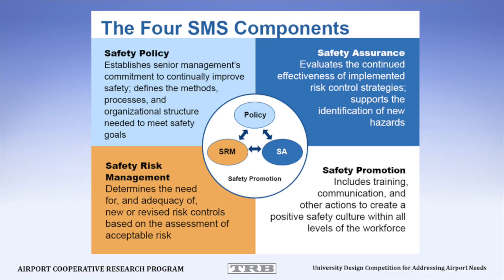First is safety policy, which is management's commitment to continually improve safety. It's the allocation of appropriate resources and defines the organizational structure to accomplish safety improvement. Second is safety risk management, which is the process of identifying hazards, conducting the risk assessment and risk analysis, and treating the risk to achieve the lowest practicable level of risk — not lowest possible level of risk. If it costs $1 to prevent one accident, this is a no brainer. But what if it costs $1 million, or even $1 trillion, to prevent that one accident? I think you can see the difference between what is feasible and what is not.